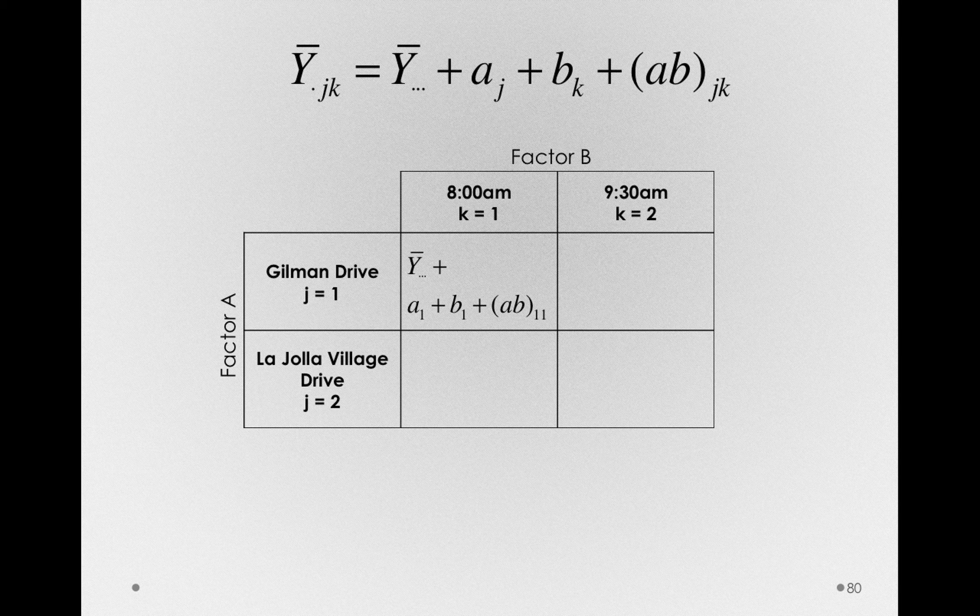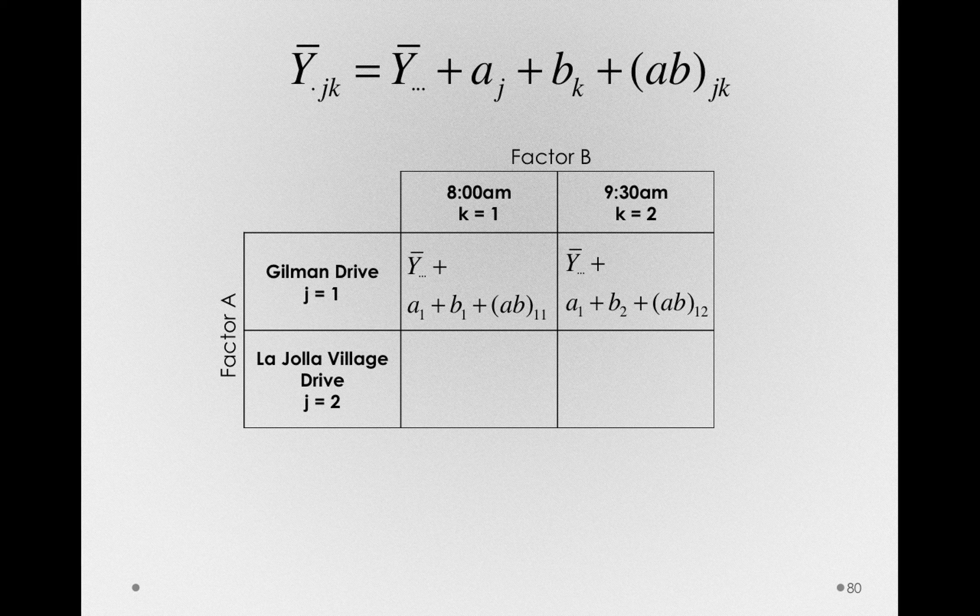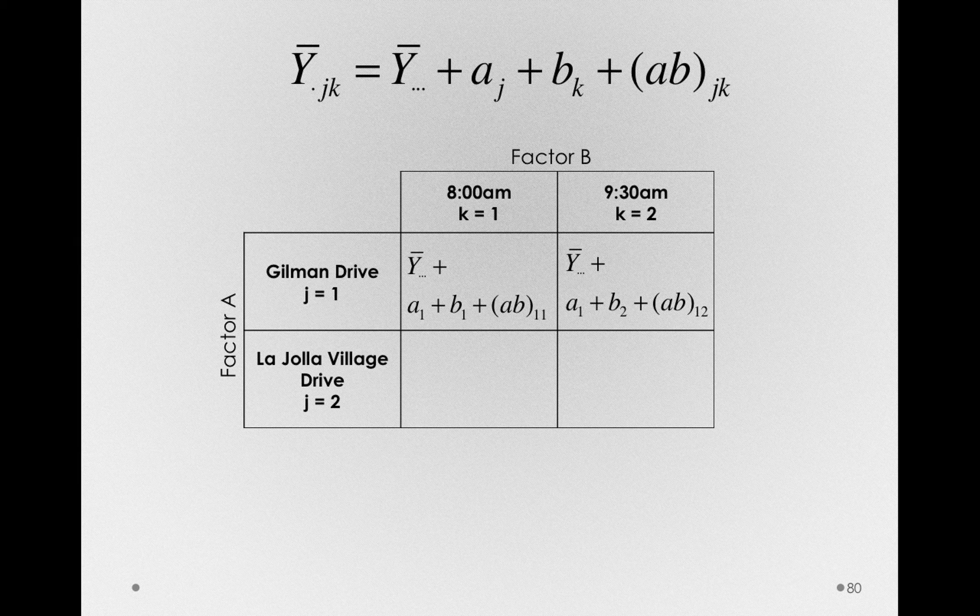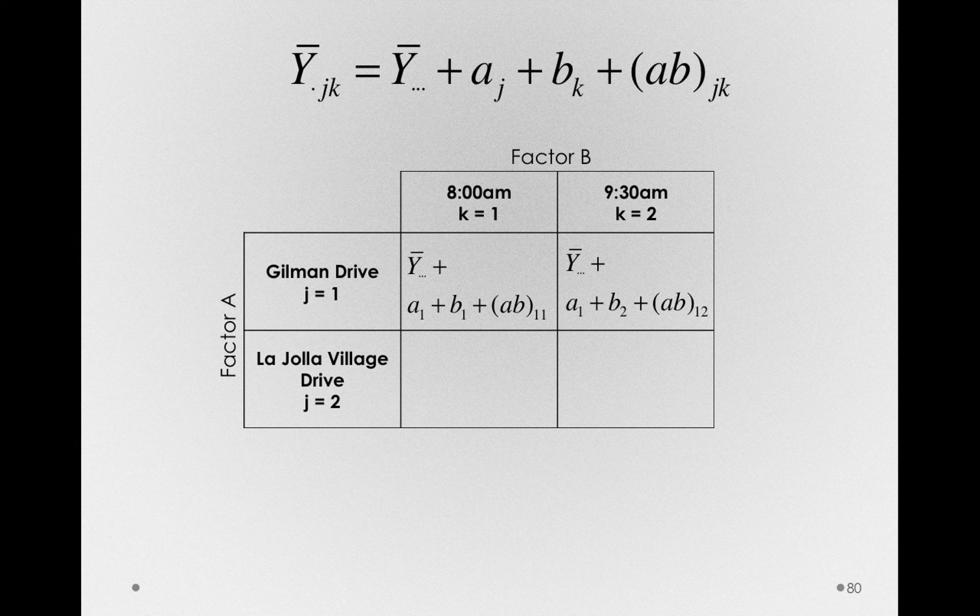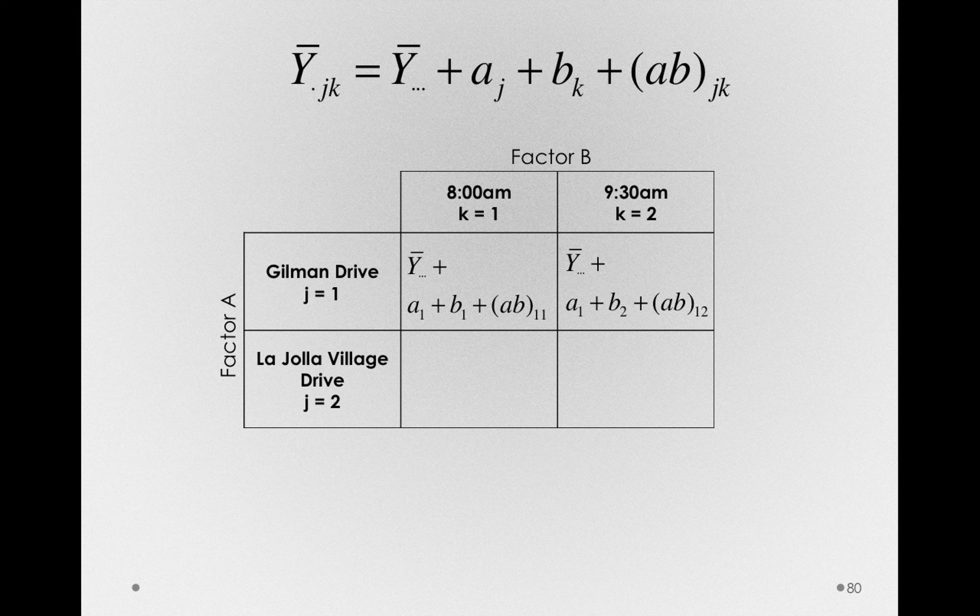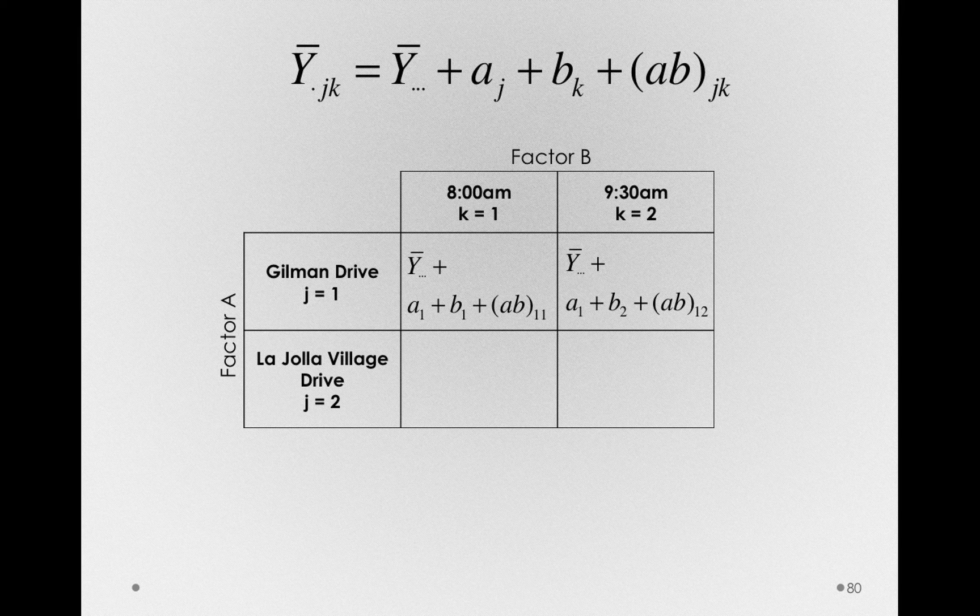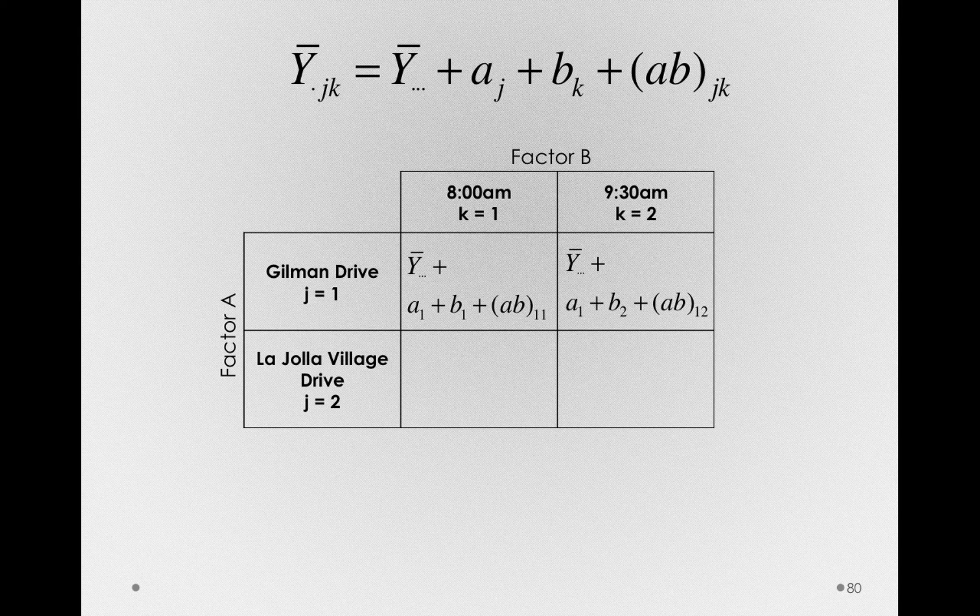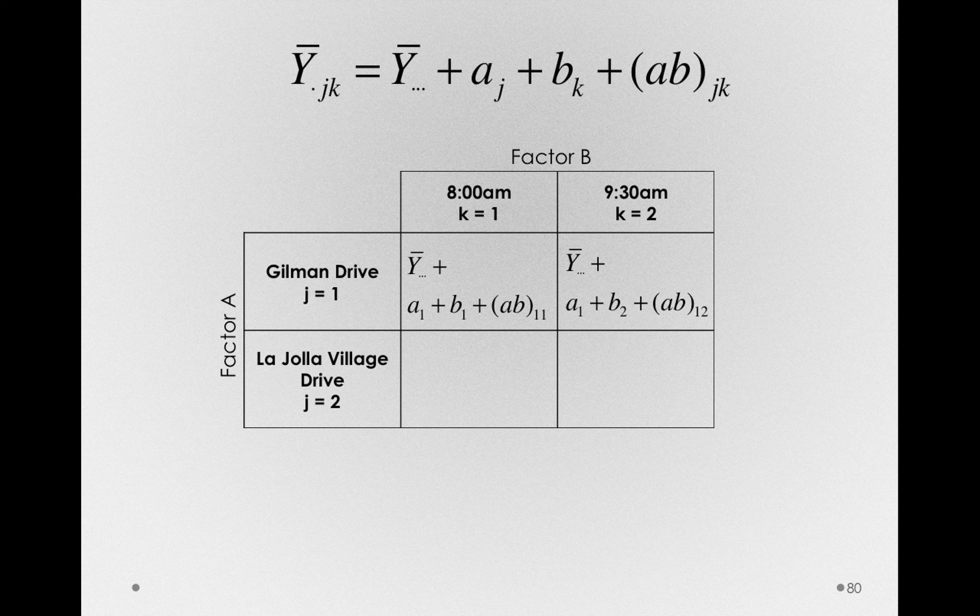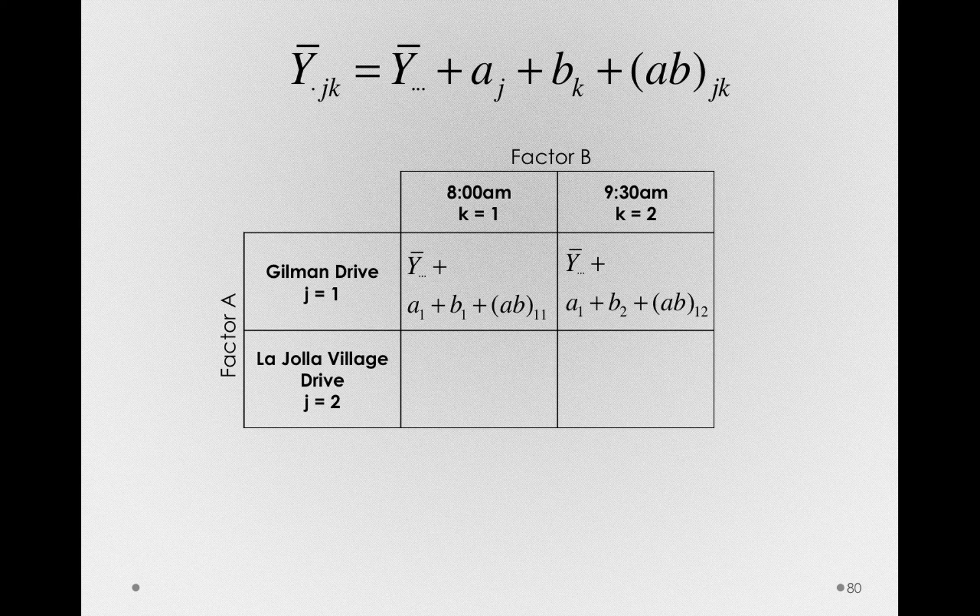Let's move forward to Gilman Drive at 9:30 a.m. We'll increment the k in each of these terms. So it'll be y bar dot dot dot plus a_1, the same value we found before for 8 a.m. Notice that we're still in Gilman Drive, so the a term will be shared. But in this case, plus b_2. So instead of b_1, we'll be adding b_2 for the mean at 9:30, plus a different value for ab. This will be ab_12.